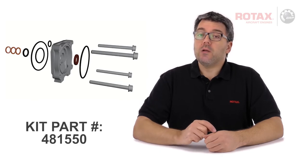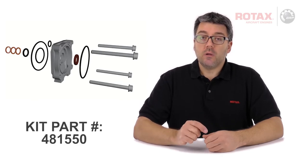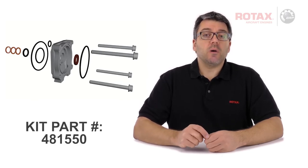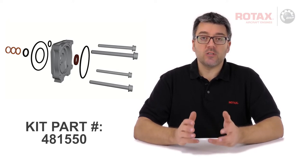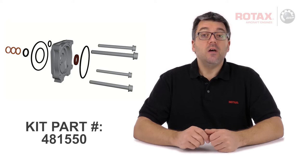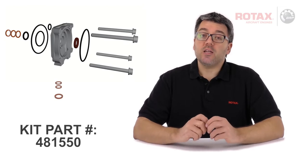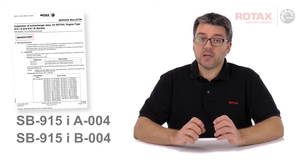Rotax has made available a parts kit, part number 481550, which includes replacement oil pump housing and all seals, o-rings and gaskets required for its exchange. This parts kit also includes replacement sealing gaskets required to perform 915 IS turbocharger inspection.